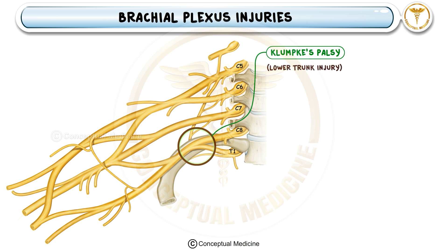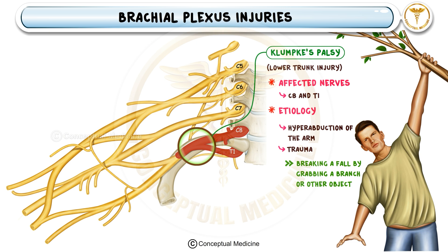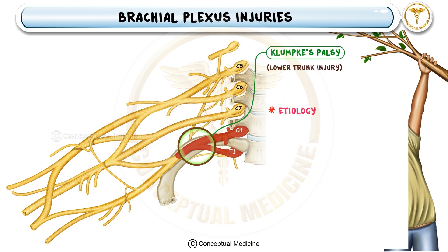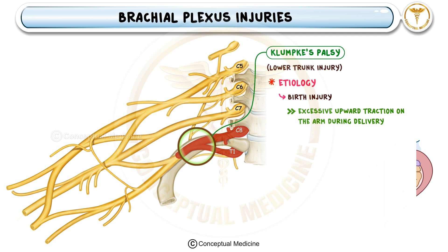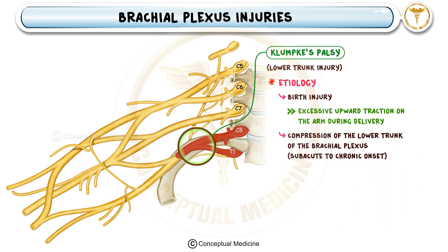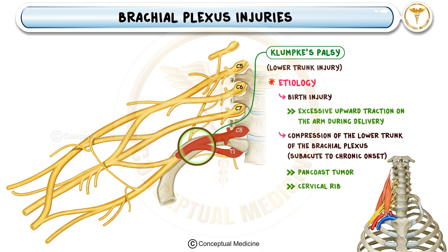Klumke's palsy is a lower trunk injury involving C8 and T1. It affects the lower trunk of the brachial plexus, specifically the C8 and T1 nerve roots. This type of injury is commonly caused by hyperabduction of the arm, which occurs when someone tries to catch themselves while falling by grabbing onto something like a tree branch. It can also result from birth trauma, where excessive upward traction is applied to the baby's arm during delivery. Another important cause is compression of the lower brachial plexus due to conditions like a Pancoast tumor — a lung tumor at the apex of the lung — or a cervical rib, causing chronic irritation and dysfunction of the lower trunk nerves.